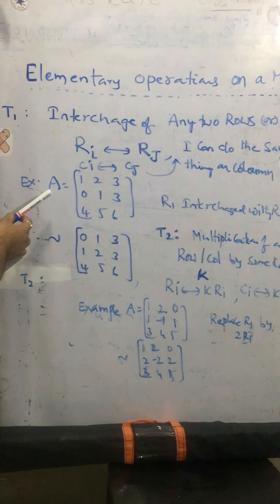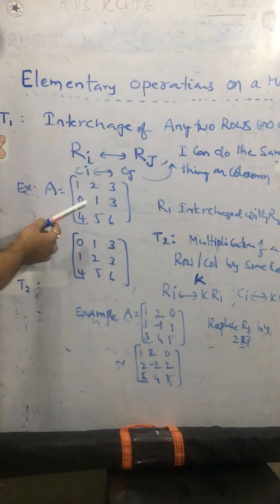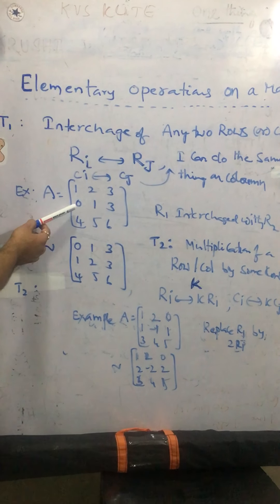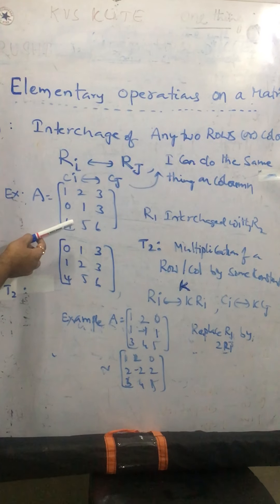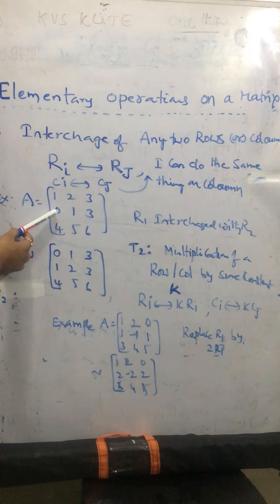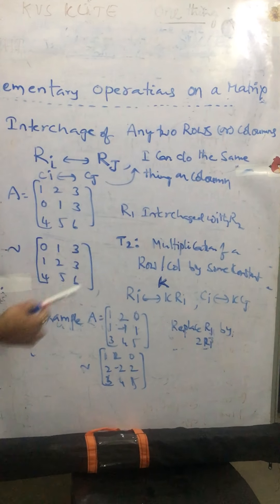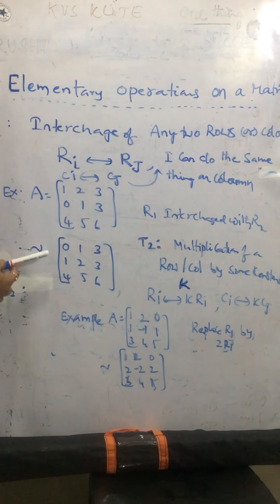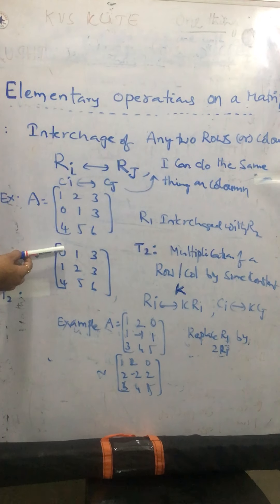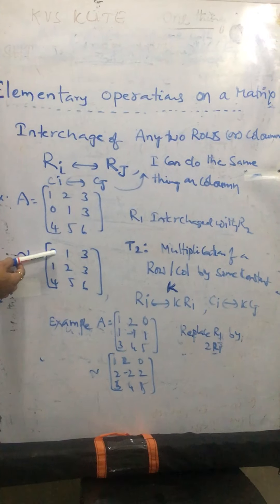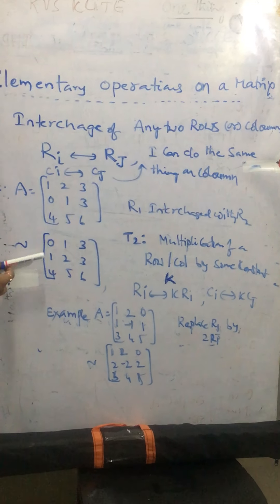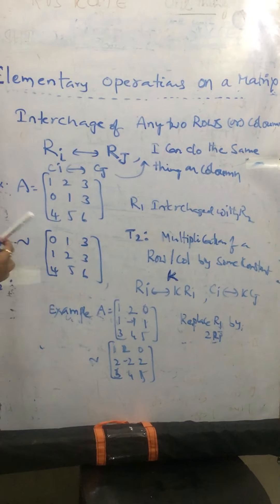For example, matrix A is given by 1, 2, 3, first row, 0, 1, 3, second row, 4, 5, 6, third row. On this matrix, what I am doing, interchange R1 with elements of R2. So from this, I get the new matrix of the form, 0, 1, 3, R2 become R1, and R1 becomes R2 here, 0, 1, 3, 1, 2, 3, 4, 5, 6.